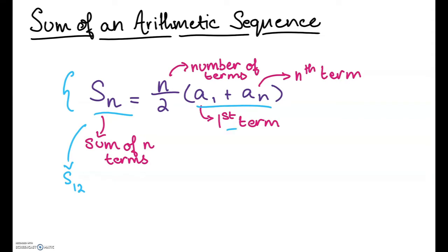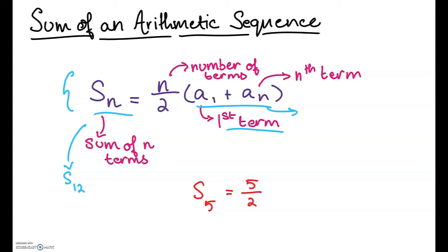Then we multiply by a1 plus an. A of 1 is just the first term of your sequence, and a of n is the nth term for the sum you want to find. So if you want the sum of the first 12 terms, you would use a of 12. For example, S of 5 equals 5 over 2 times a of 1 plus a of 5.